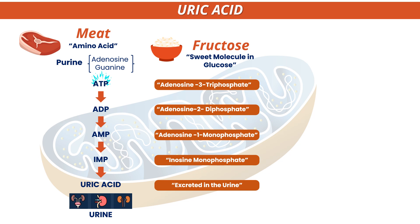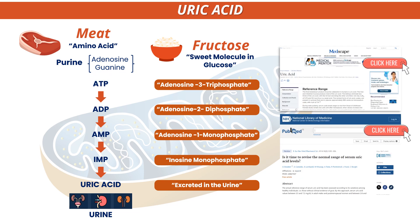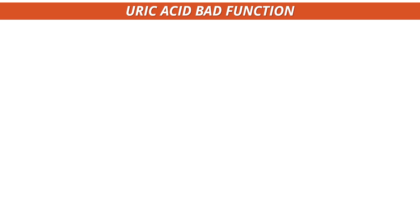Besides meat, we also have glucose. Glucose is made of sugar and fructose — fructose being the sweet molecule in sugar. Both of them specifically contribute to uric acid because they go through a biochemical pathophysiology in which they cause damage to your mitochondria. You can Google this and check the National Institutes of Health — everything I'm telling you comes from scientific evidence.